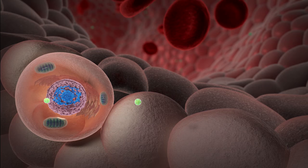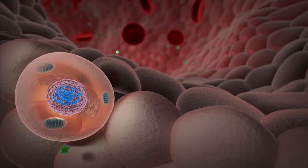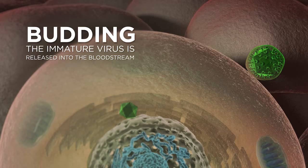Using the host cell's machinery, the virus creates new HIV. In a process called budding, the immature virus is released into the bloodstream where it matures and can infect other cells.